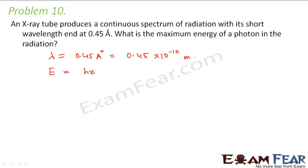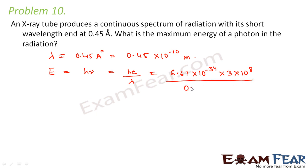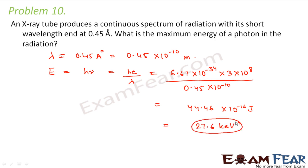What would be the energy of the photon? Energy of a photon is given by hν, which can be written as hc/λ, because frequency is related to wavelength by ν = c/λ. So this comes out to be (6.67 × 10⁻³⁴ × 3 × 10⁸) divided by (0.45 × 10⁻¹⁰), which gives 44.46 × 10⁻¹⁶ joules. Converting to electron volts by dividing by 1.6 × 10⁻¹⁹, this comes out to be 27.6 kilo electron volts — the maximum energy of a photon in the radiation.